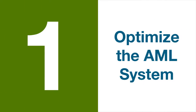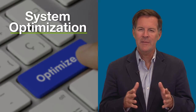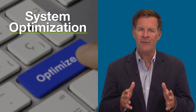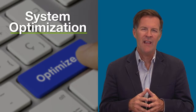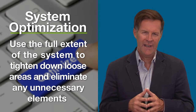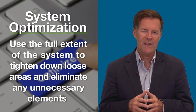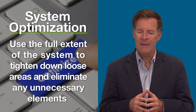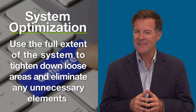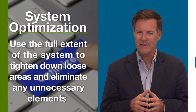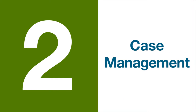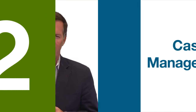Step one in this process is to optimize the AML system. System optimization focuses on using the full extent of the system to tighten down loose areas and eliminate unnecessary elements. Step two in the process focuses on the strengths of case management.